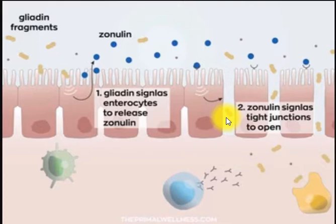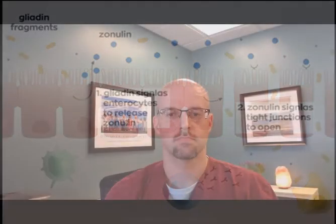Now you start to get symptoms of autoimmune disease, because your immune system is attacking cells it's not supposed to attack. So there you have it — one of gluten's dirty little secrets is that it's a precursor and one of the causes of autoimmune disease. This is not the only factor in autoimmunity, but it's certainly a significant one. If you'd like to learn more, let me know and I'd be happy to do more of these videos.